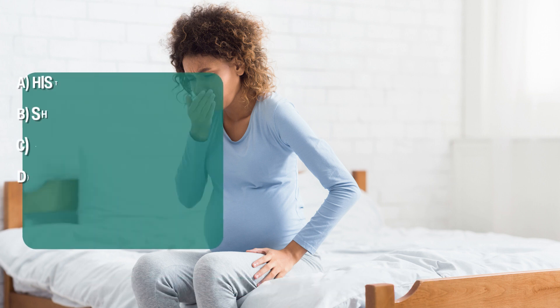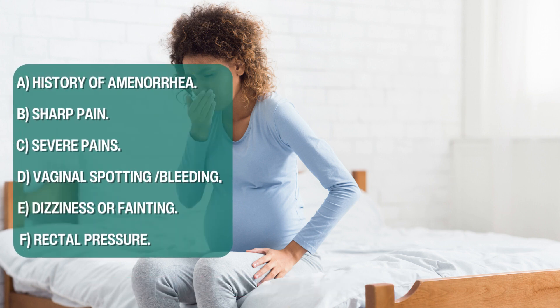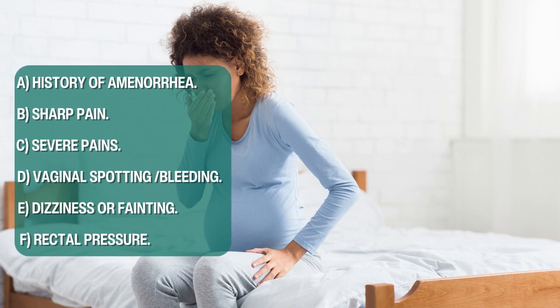The symptoms of ectopic pregnancy typically begin with a history of amenorrhea — you missed your period — and a positive pregnancy test confirming pregnancy. You may then develop a sharp, usually unilateral pain on the left or right side of the pelvis, shoulder pain, severe pain on one side of the abdomen, vaginal spotting, brownish discharge, dizziness, fainting, and even rectal pain.